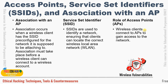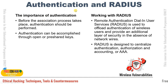Authentication should be performed before association to ensure only authorized clients connect. RADIUS (Remote Authentication Dial-In User Service) offloads authentication for wireless users and provides an additional security layer. RADIUS centralizes Authentication, Authorization, and Accounting (AAA), which is especially useful in large organizations with many wireless clients. RADIUS can also be used with VPNs or firewalls to provide additional protection for wireless clients and the network.